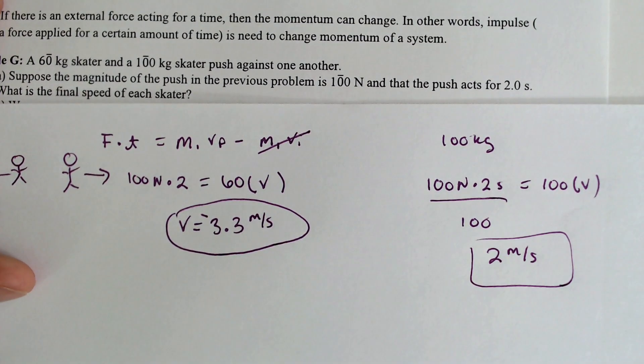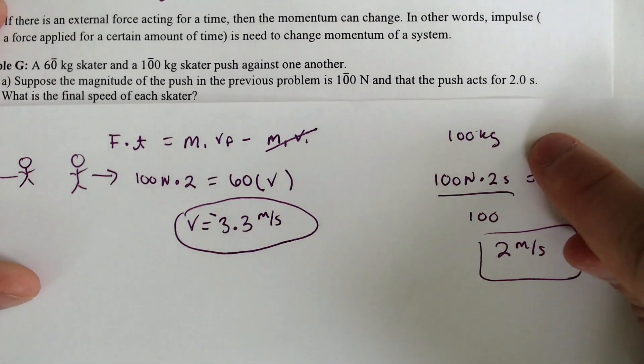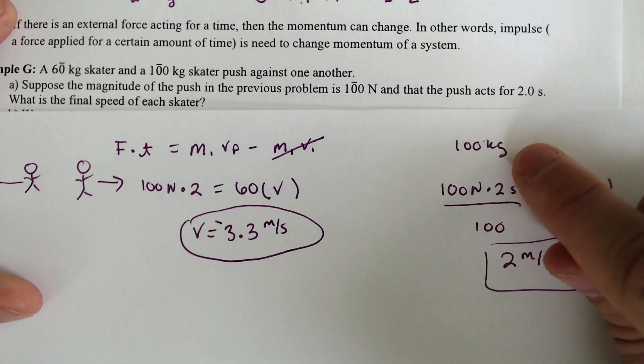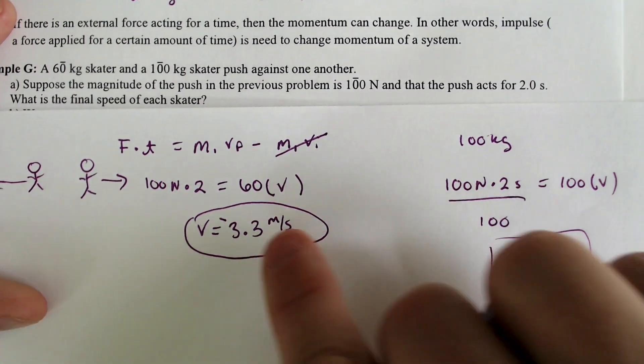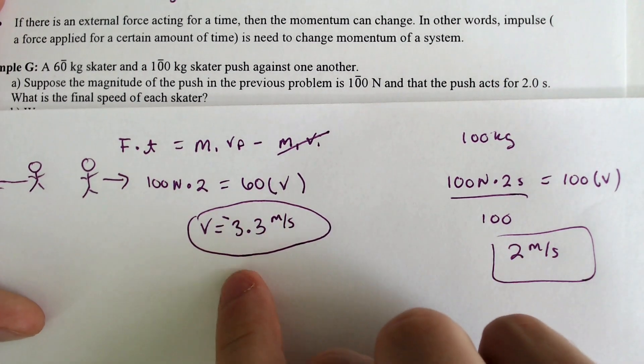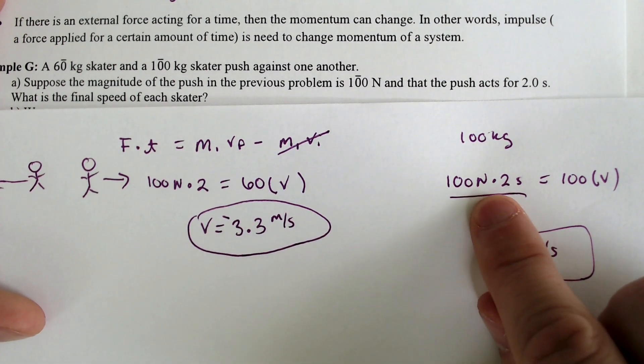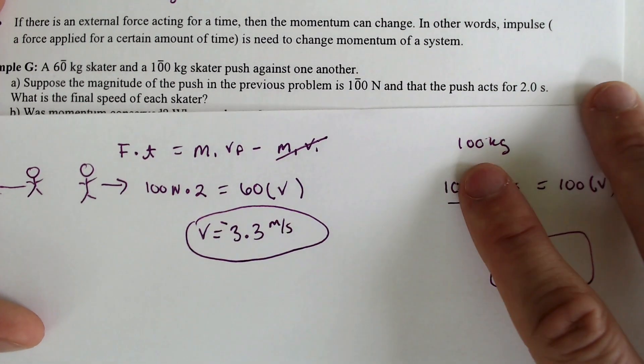And that also should make sense, because the 100-kilogram skater has a bigger inertia, because they're bigger, and that means that it would be a little bit harder for them to move than it would be for the 60-kilogram skater, because they're a little bit lighter. They're going to go a little bit further, given the same amount of force for the same amount of time.